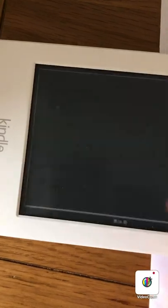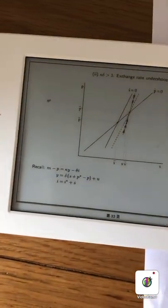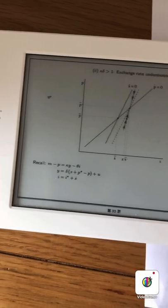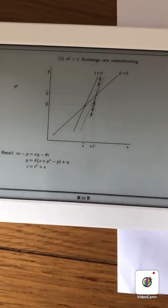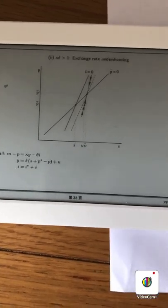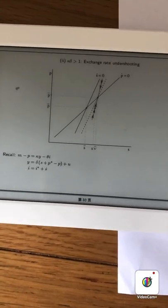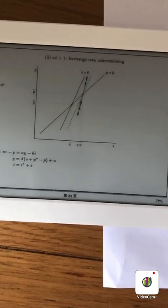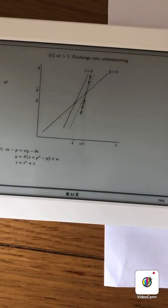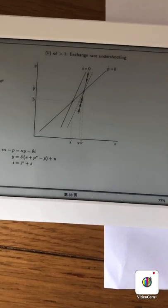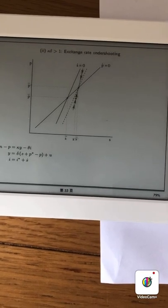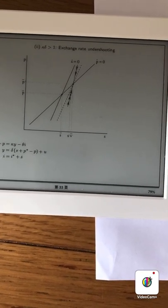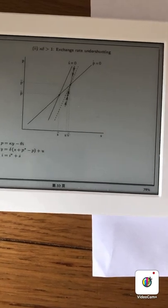But if we have instead that ky is bigger than 1, then if we have an increase in m, then that translates to an increase in ky. And in fact, if it is too big, it needs an increase in i to counter this effect. So that leads to more demand for domestic currency and an appreciation, which is a decrease in s.